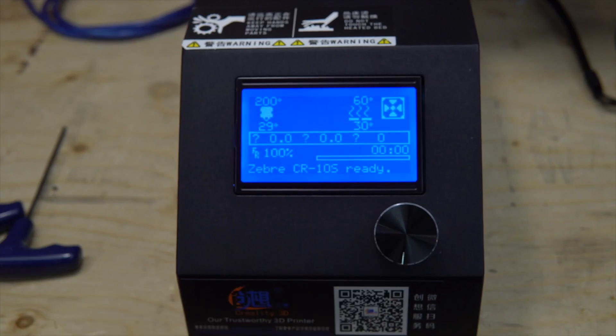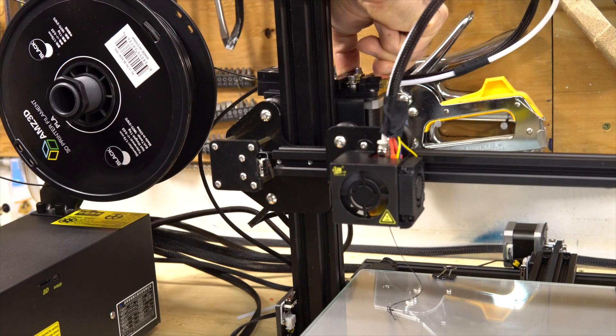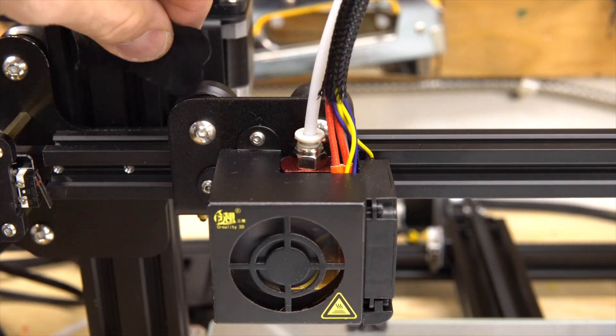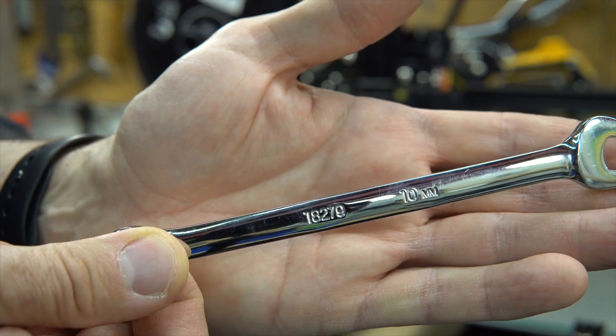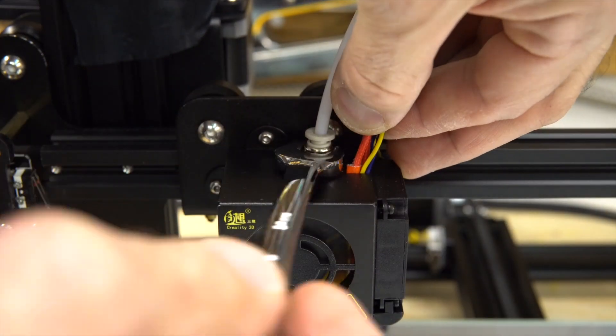Okay, first preheat for PLA, then remove the filament. Undo this little tape, use a 10 millimeter wrench and undo the fitting for the Bowden tube.